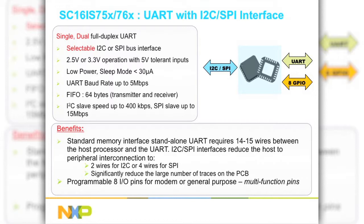On the host interface, the device supports fast mode or 400 kHz I2C bus speeds or 15 MHz SPI bus speed. The obvious benefit of this device is the simplicity of the host interface. Standard memory or IO-mapped UARTs require 14 to 15 wires between the host controller and the UART. This device reduces the number of wires to 2 for I2C and 4 for SPI.